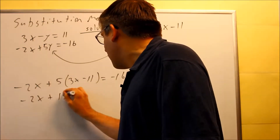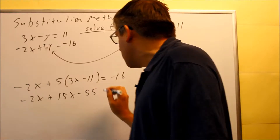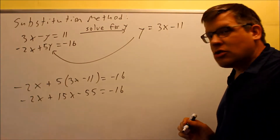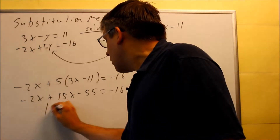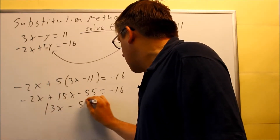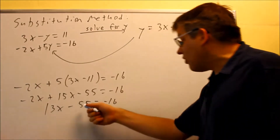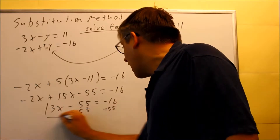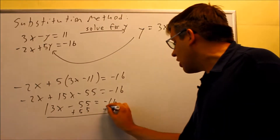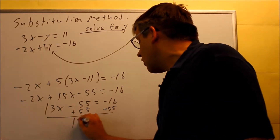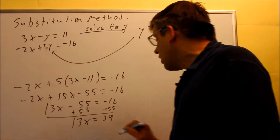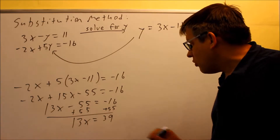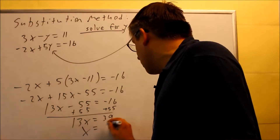Negative 2x plus 15x minus 55 — we distribute the 5 through the parentheses and add like terms together. 15 minus 2 gives us 13x. Then we add 55 to both sides. Be careful with your signs — you get 13x equals 39. Divide both sides by 13 and we get x equals 3.